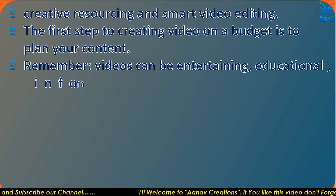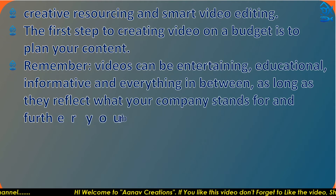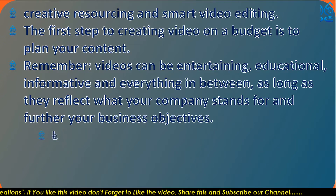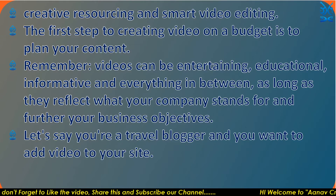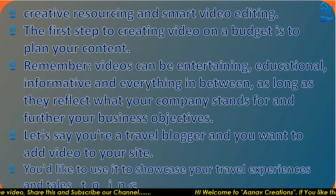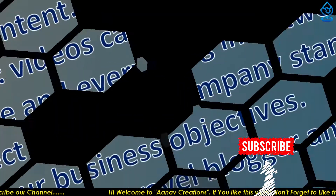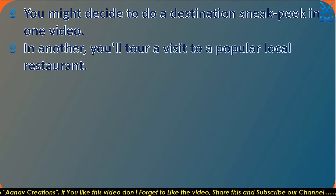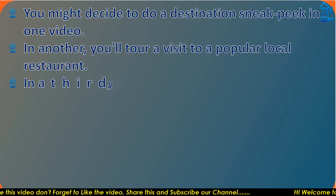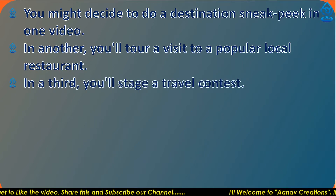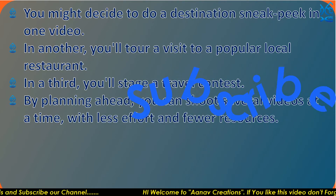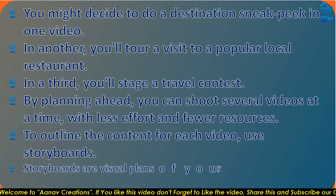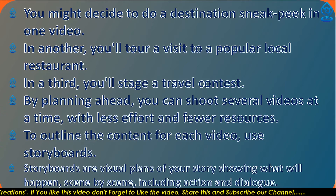The first step to create videos on a budget is to plan your content. Remember, videos can be entertaining, educational, informative, and everything in between. They should reflect what your company stands for and further your business objectives. Let's say you are a travel blogger and you want to add video to your site — you'd like to use it to showcase your travel experiences and tales and increase your subscriber base. You might do a destination sneak peek in one video, tour a popular local restaurant in another, and stage a travel contest in a third. By planning ahead, you can shoot several videos at a time with less effort and fewer resources. To outline the content for each video, use storyboards — visual plans of your story that showcase what will happen scene by scene, including action and dialogue.